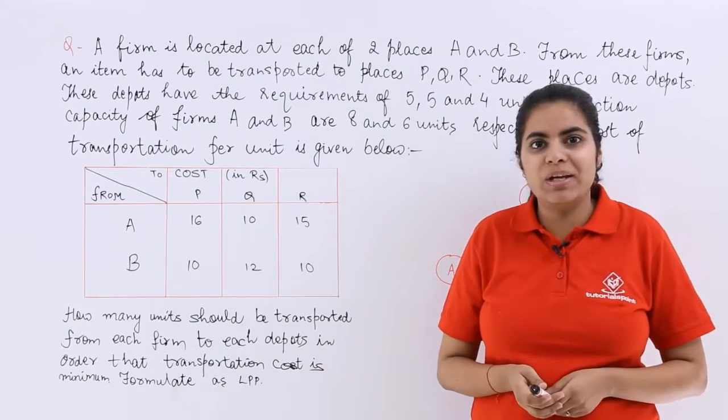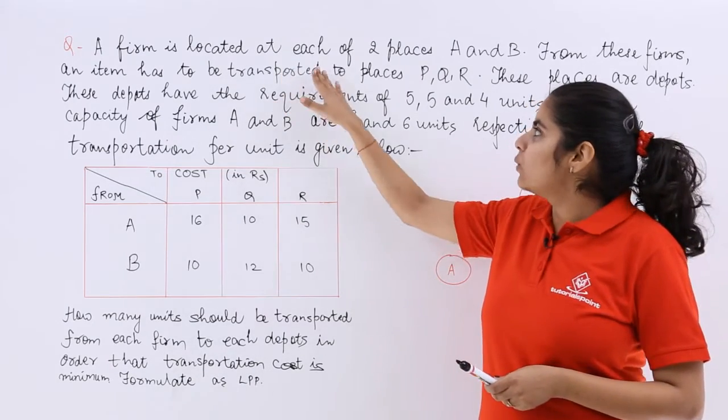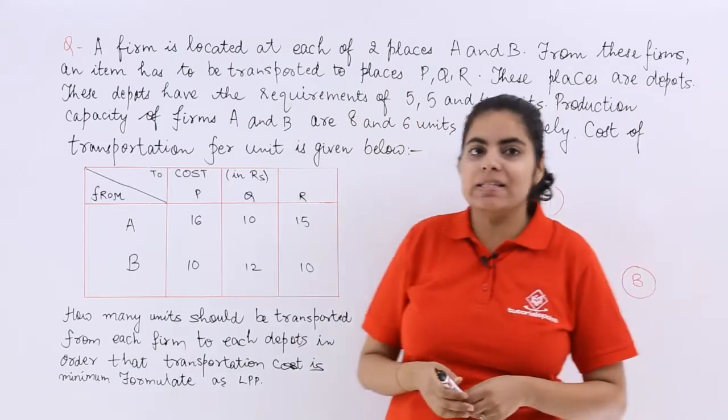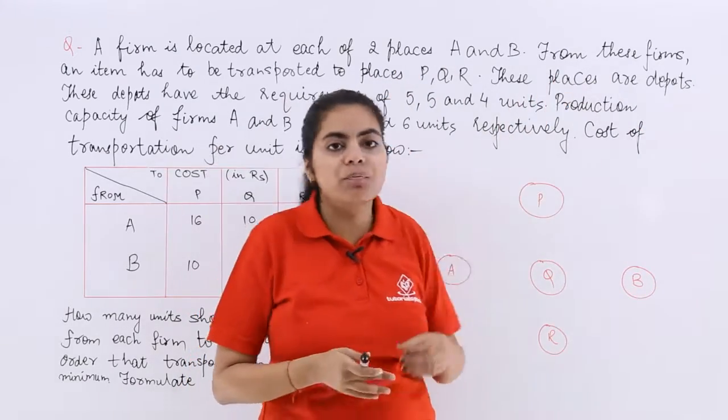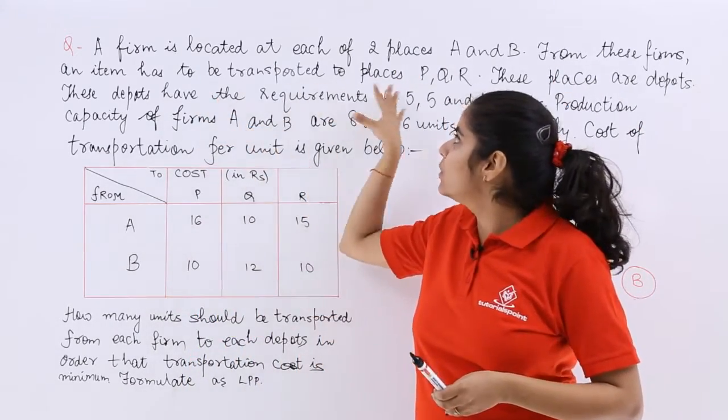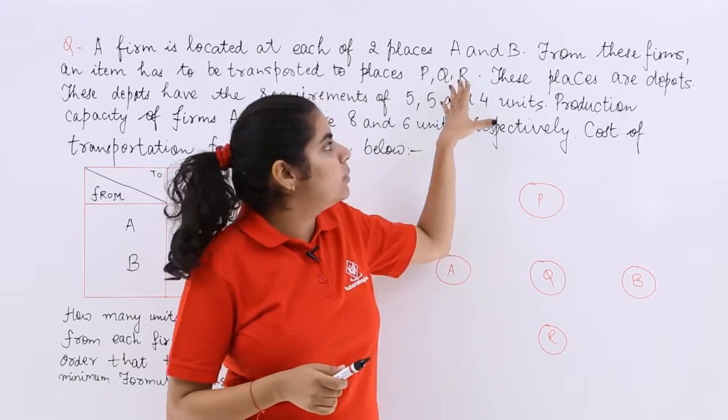Let's see this lengthy question. It says a firm is located at each of the two places A and B. From these firms, an item has to be transported to the places P, Q, R.